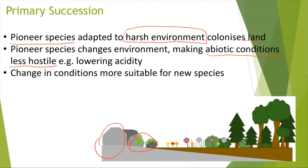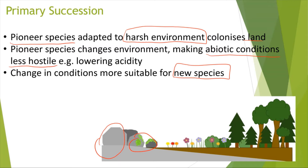Next, the change in conditions is more suitable for the new species. The new species which will be coming on next — the pioneer species have done them a favour by making the conditions more suitable for them so they can survive in those conditions. What happens next is that new, less adapted species would come along. For example, first we had the pioneer species, but now the less adapted species, which are not adapted to the harsh environments, can come to this land because the conditions aren't really harsh anymore.